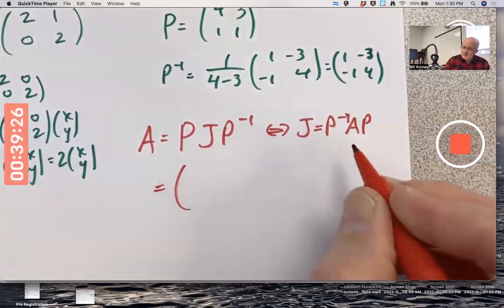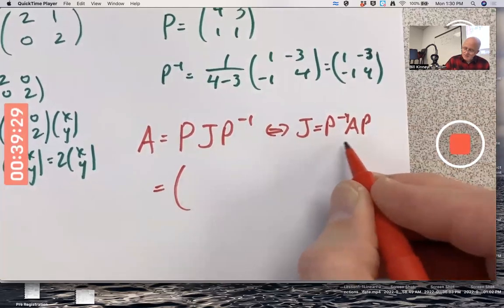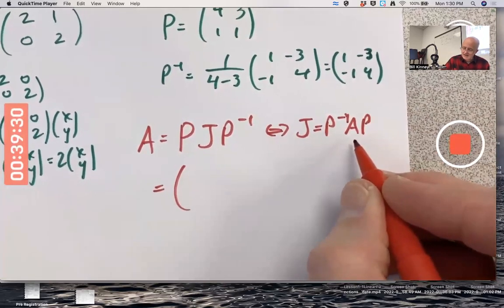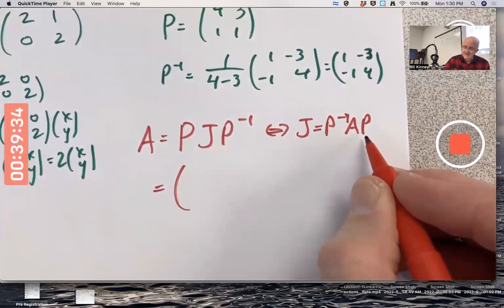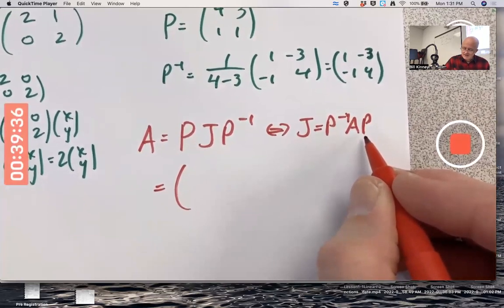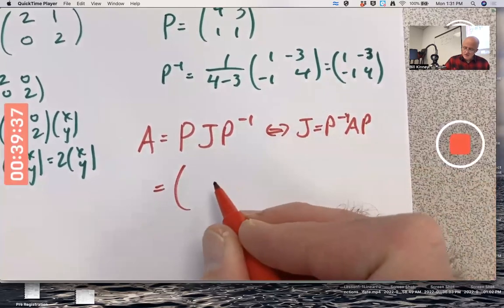Usually, when you're trying to diagonalize A, you put the P inverse in front of the A if P has columns that are the eigenvectors of A.